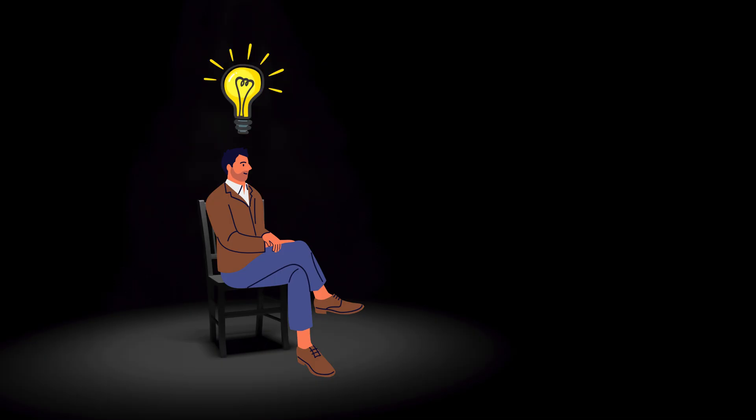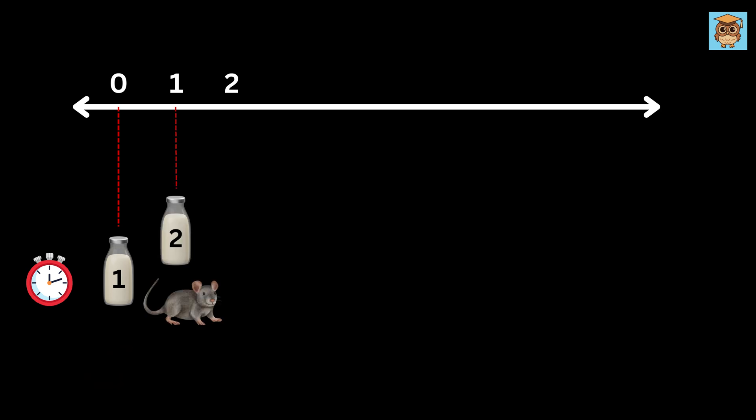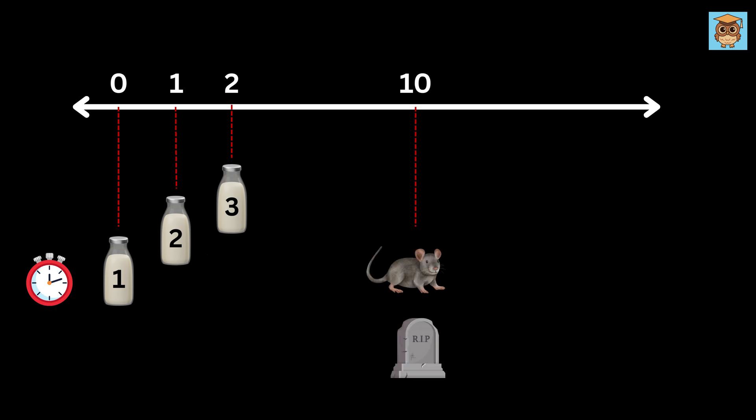Now here's the trick. Feed the rat from the first bottle and start the timer, then after one hour feed the rat from the second bottle, and after two hours feed the rat from the third bottle.